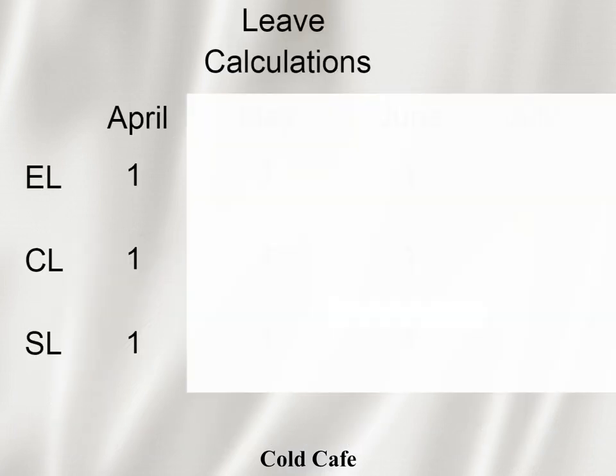Let me give a simple example of how leaves are calculated. Leave is calculated on a financial year basis — for example, April to March. On a month-by-month basis, they will add one leave from each leave type. There are three leave types: casual leave, earned leave, and sick leave. So if April month starts, they will add three leaves — casual leave one, earned leave one, sick leave one. If I take any leave in April, it will be deducted from the respective leave balance. If I take excess leave, it goes to loss of pay.